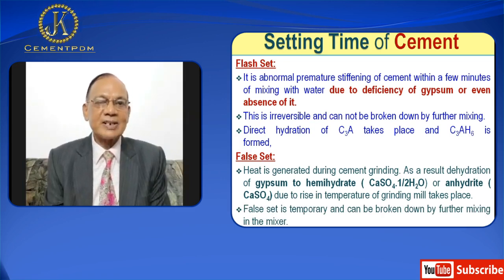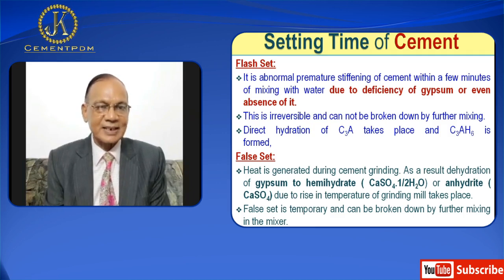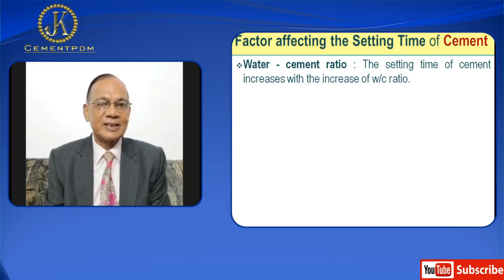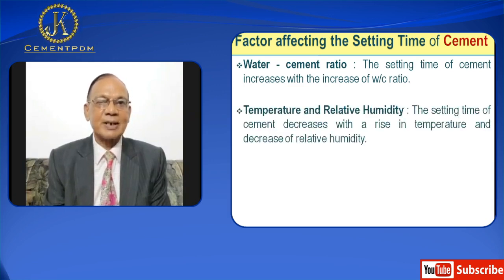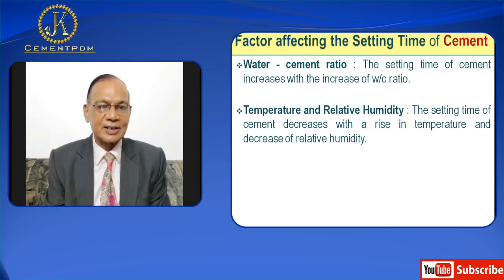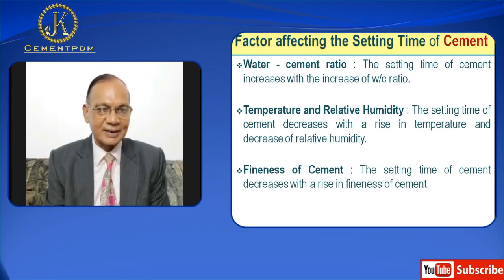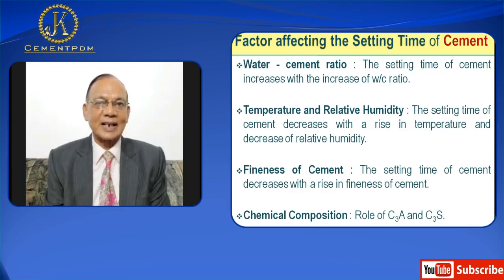Now I will briefly discuss the factors which are responsible for setting time. Number one is water-cement ratio — the setting time of cement increases with the increase of water-cement ratio. Next is temperature and relative humidity — the setting time decreases with a rise in temperature and decrease of relative humidity. Then comes fineness of cement. Setting time also depends upon the chemical composition of cement, particularly the role of C3A and C3S. If you have high C3A or high C3S, then you get early setting time.